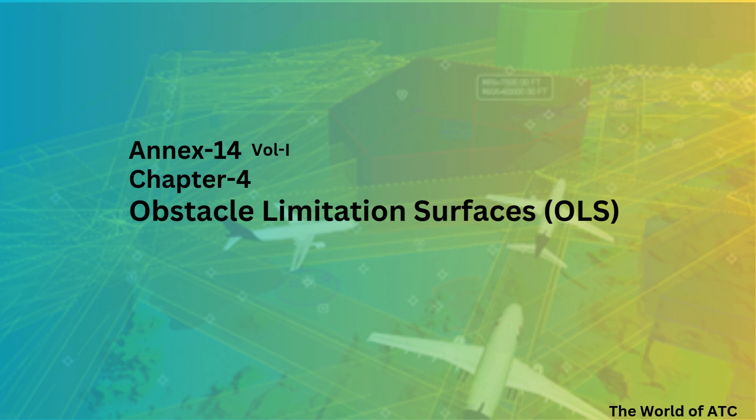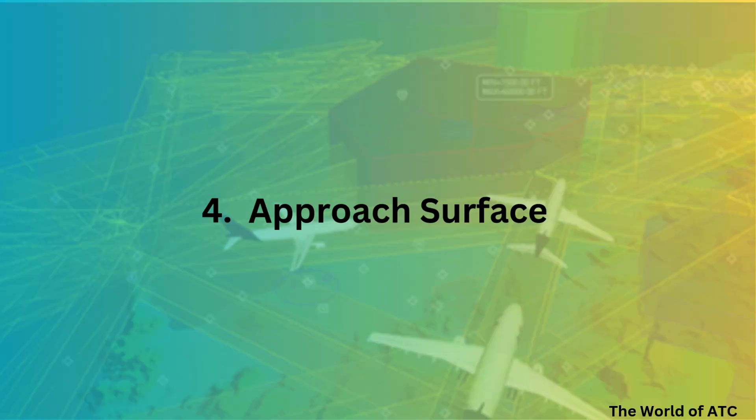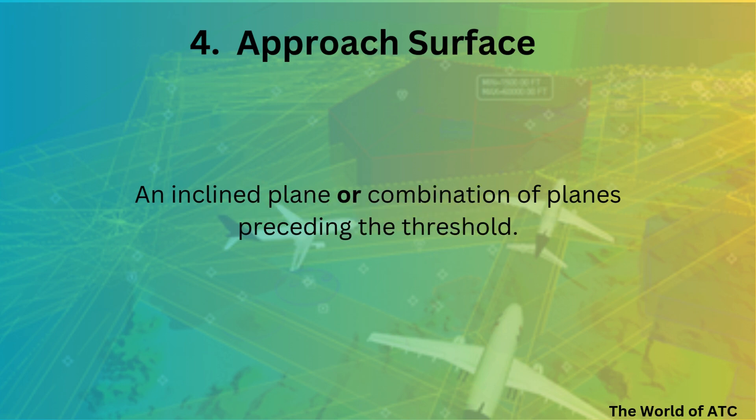Out of chapter 4 of Annex 14 obstacle limitation surfaces, we have already discussed the first three surfaces. Moving on to the fourth surface, that is the approach surface, which is defined as an inclined plane or combination of planes preceding the threshold.